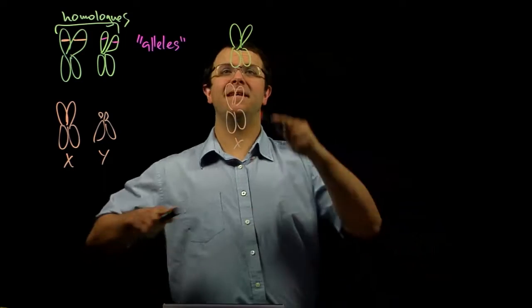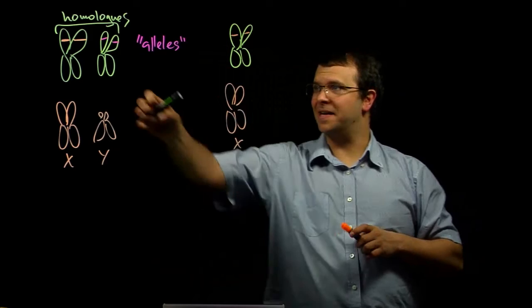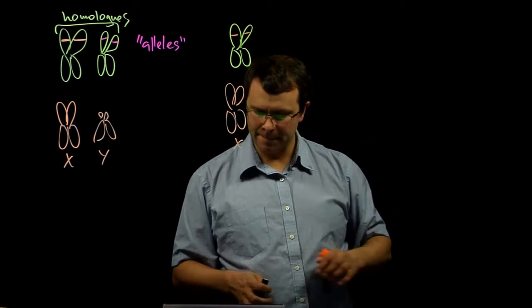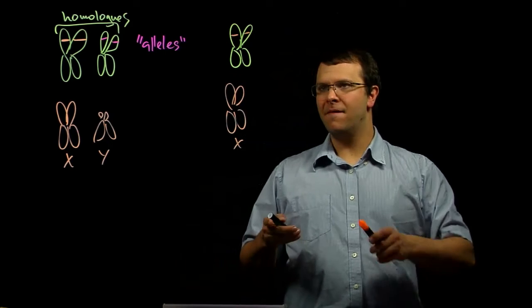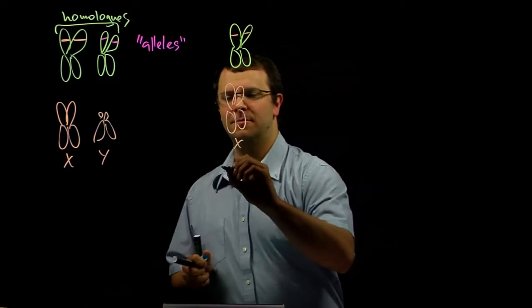And let's say that the gamete cell carries this orange allele instead of the pink allele. And so, if a gamete has N chromosomes,